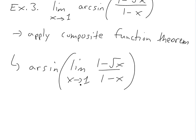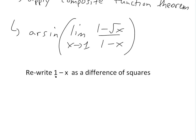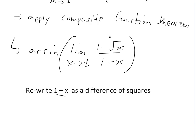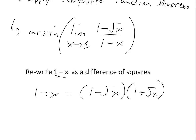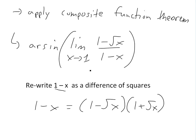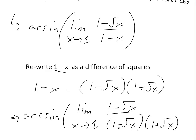We can't just plug in 1 because 1 minus 1 is 0 in the denominator. What we can do is recognize that 1 minus x is a difference of squares, and rewrite it as (1 minus square root of x) times (1 plus square root of x). When we plug that in, the numerator is (1 minus square root of x) and the denominator is (1 minus square root of x)(1 plus square root of x). These cancel, leaving 1 over (1 plus square root of x).